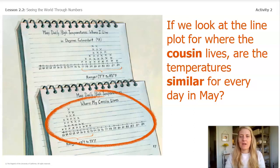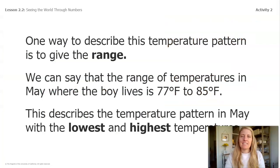One way to describe this temperature pattern is to give the range. We can say that the range of temperatures in May where the boy lives is 77 degrees to 85 degrees Fahrenheit. This describes the temperature pattern in May with the lowest and highest temperatures. The range of temperatures where the boy's cousin lives was 65 degrees Fahrenheit to 73 degrees Fahrenheit. This describes the temperature pattern in May at his cousin's house.